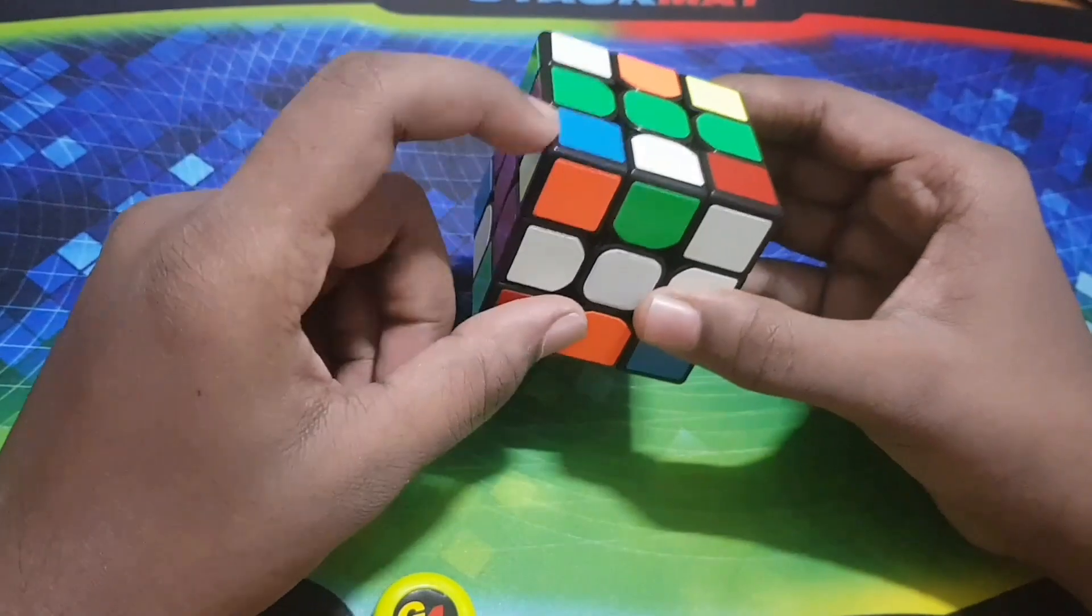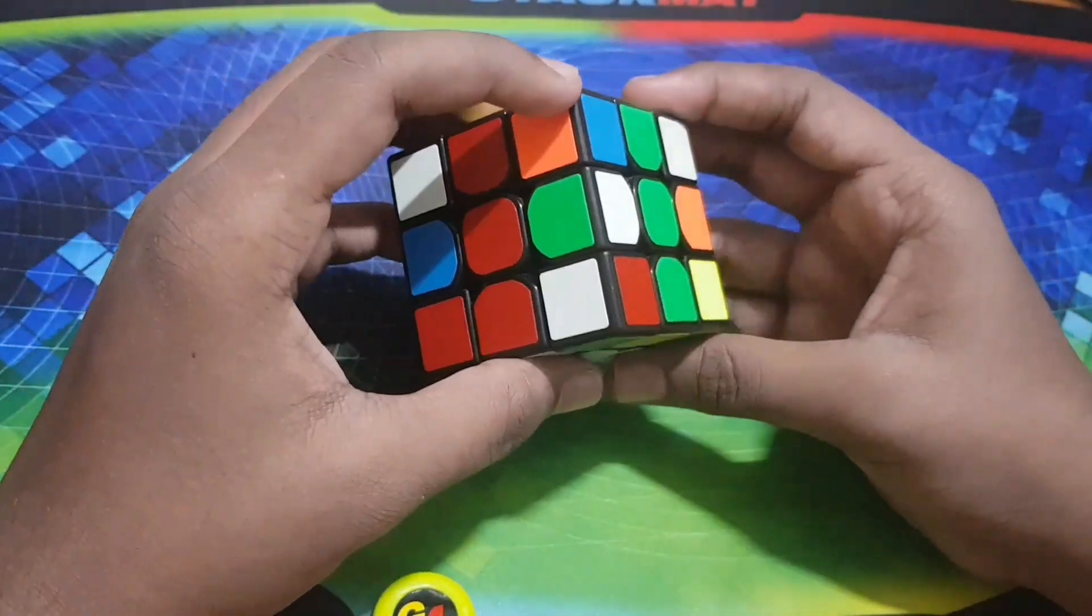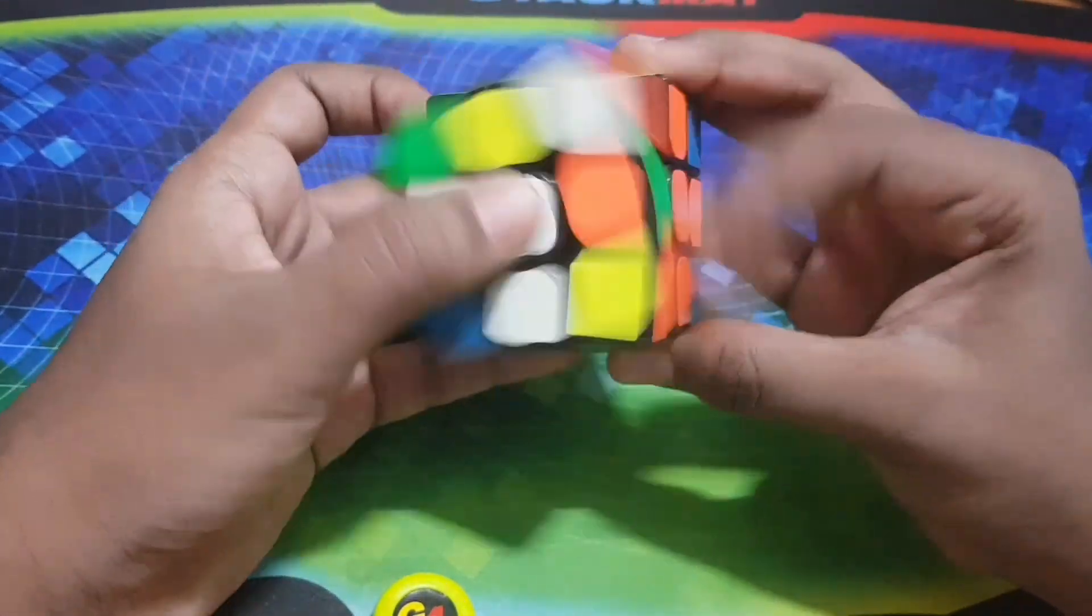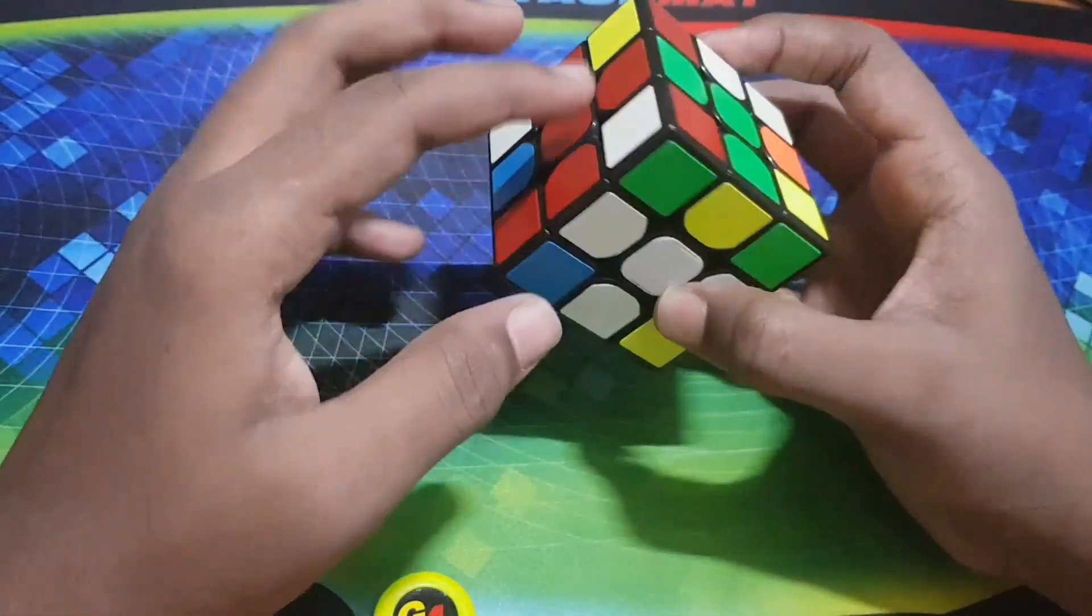This is the next one and the green edge is right here, so bring them both here and again do the Y-perm. You'll get all the green corners and edges to the top layer and the blue ones at the bottom.